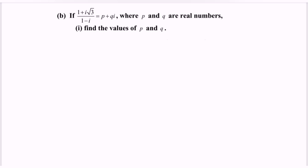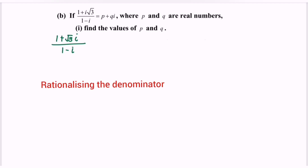Kindly focus on this part. We have (1 + √3·i) / (1 - i). In order to obtain the form p + qi, we need to multiply by the conjugate to rationalize the denominator. So the conjugate will be (1 + i) / (1 + i).